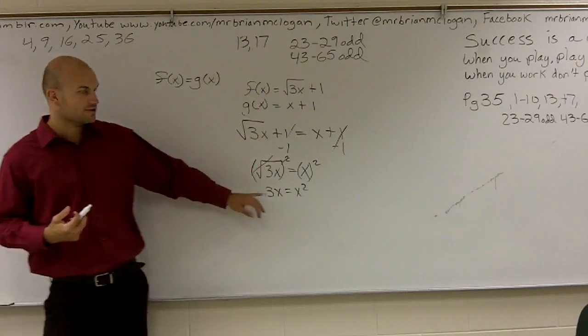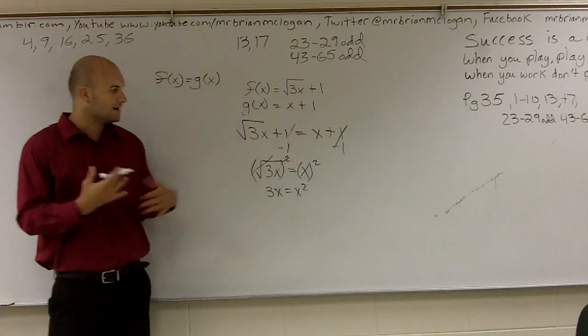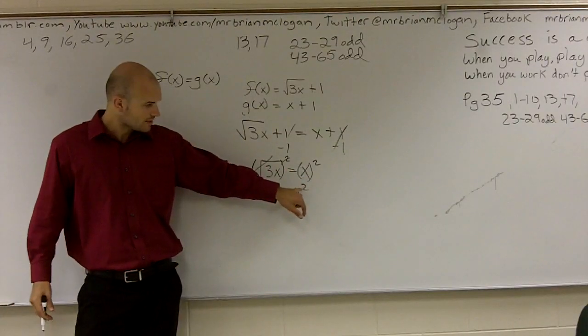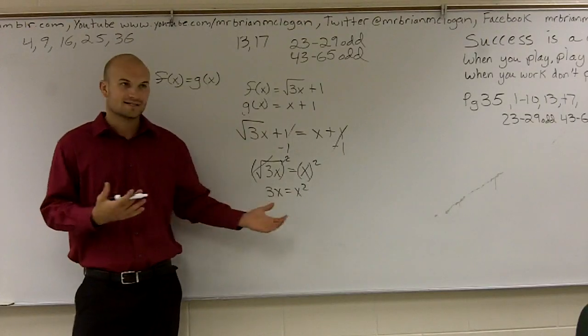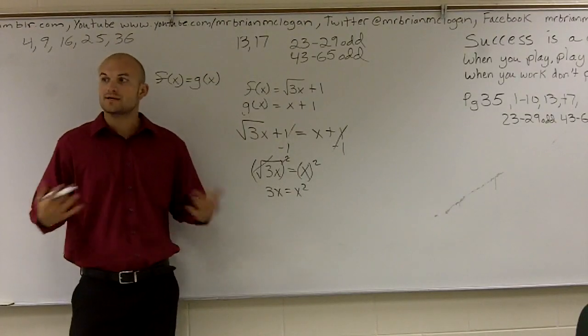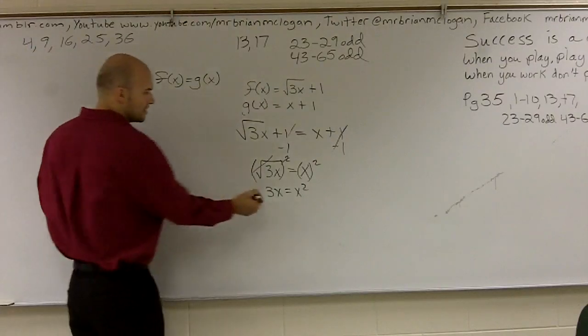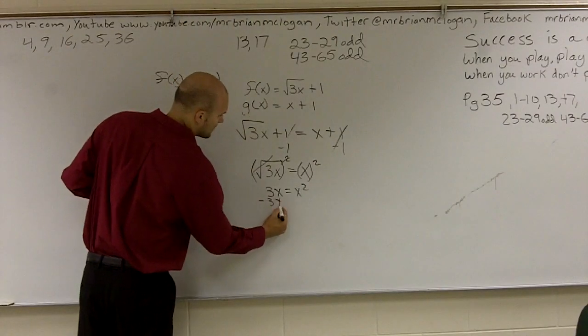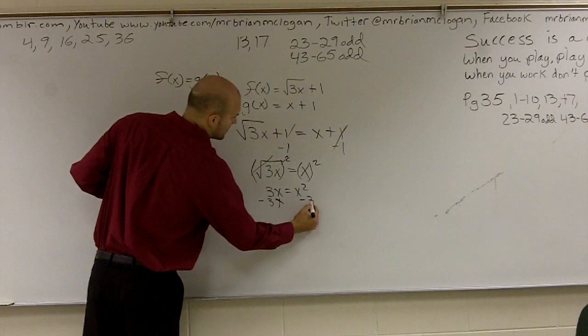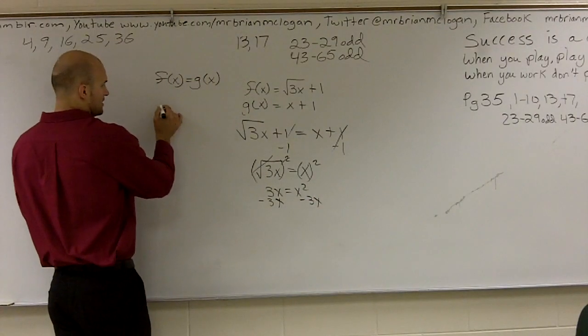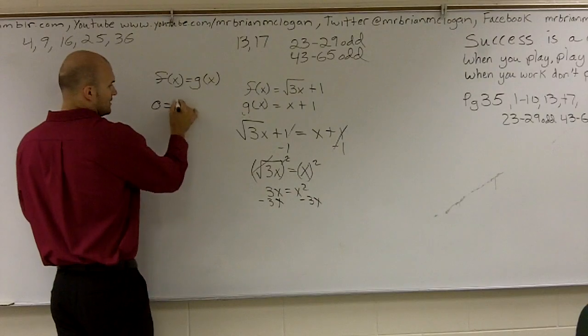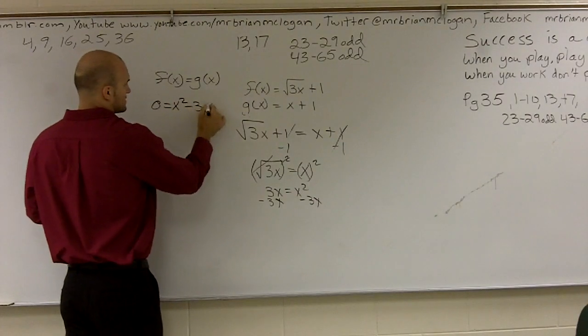Now I'm going to want to get these over to the same side. And then remember, whenever we're dealing with the power of 2, we want to start looking into if we can get our x's as a set of linear factors. Because once we can get it to linear factors, we'll be able to factor it and solve for it. So I'm going to subtract 3x and actually just continue the problem here. So I have 0 equals x squared minus 3x.